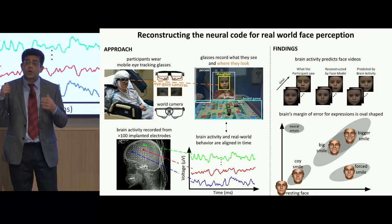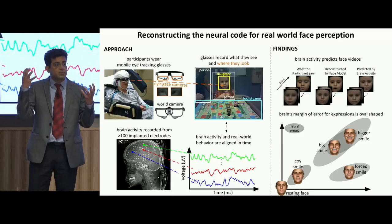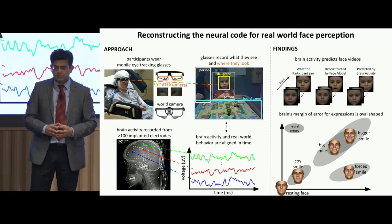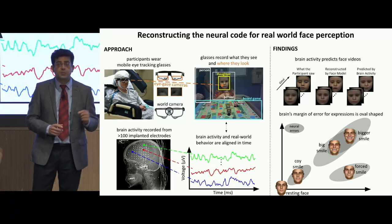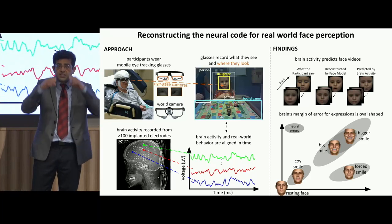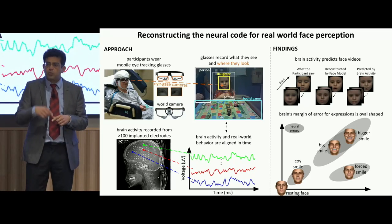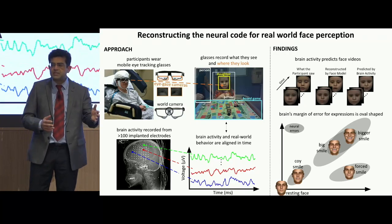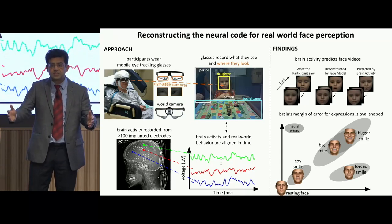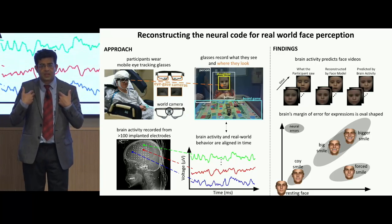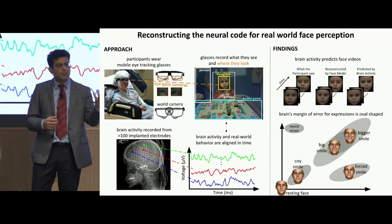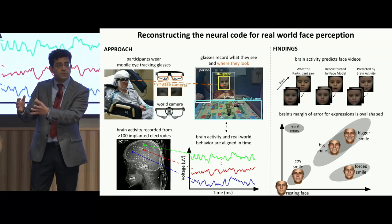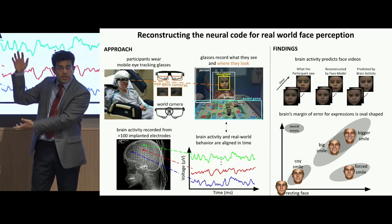In this work, we overcame those challenges by combining mobile eye tracking with brain recordings from people surgically implanted with electrodes for clinical treatment. Patients who chose to participate wore eye tracking glasses that recorded what they saw and where they looked over hours of natural interactions with their friends, family, clinicians, and even researchers. We determined all the times they looked at faces by combining eye tracking with computer vision that also distilled all faces into a few numbers from which they could be reconstructed.